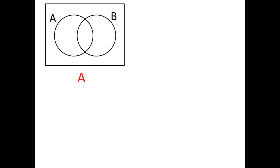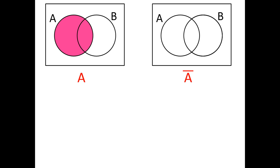Now let's see how we can color in the regions being described. If we wanted to color in everything in the universal set that is in circle A — that has attribute A — we would simply color in all of circle A. If we wanted to color in everything in A complement, the complement means everything that's not in the set, so we color in everything that's not in circle A.